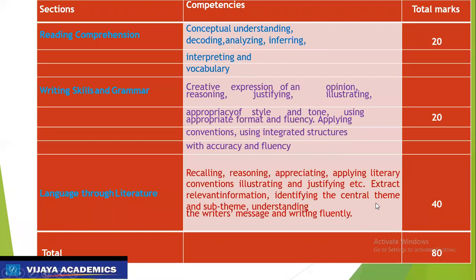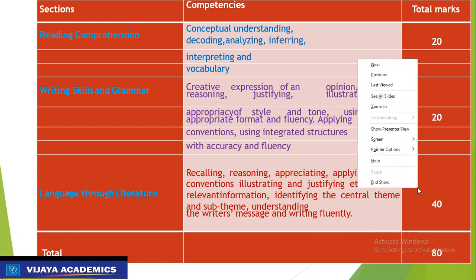For this coming session 2023-2024, for English Literature and Grammar, three sections are given. First, Section A is Reading Comprehension — it carries 20 marks. Second, Section B is Writing Skill and Grammar — it carries 20 marks. Third, Section C, Language Through Literature, is of 40 marks. In this way, the total paper will be of 80 marks.